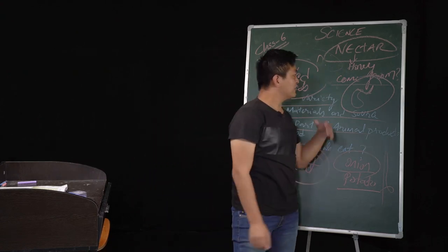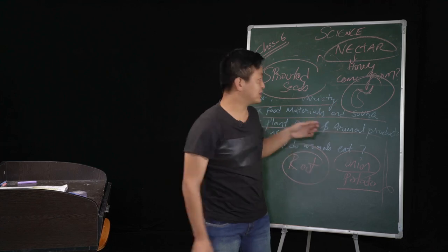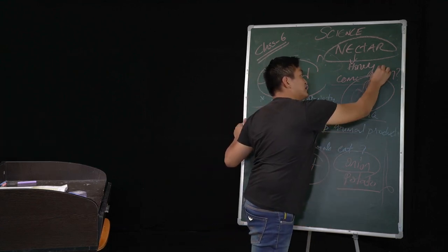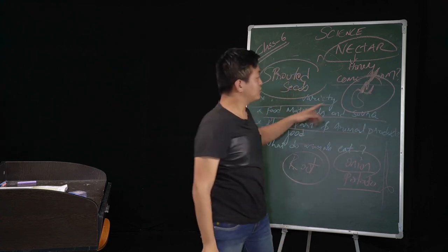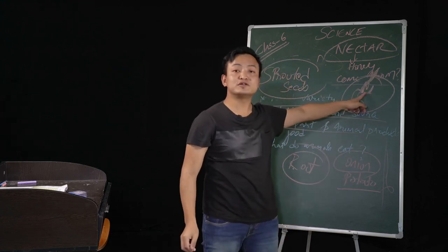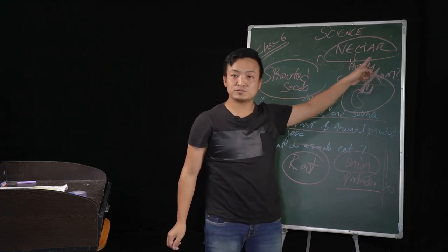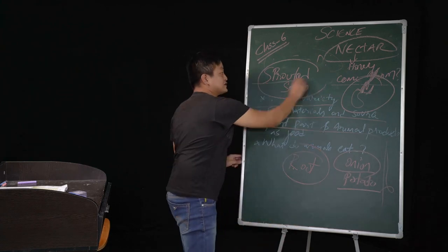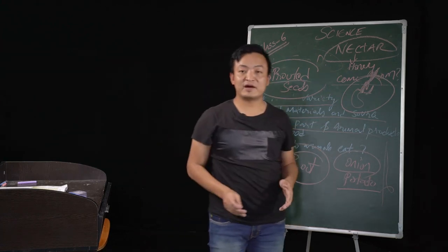Now, if you keep it for a long time, what you'll observe? You'll observe a plant. Maybe this would be the root and this would be the shoot part. So this is sprouted seeds — keep this in mind.